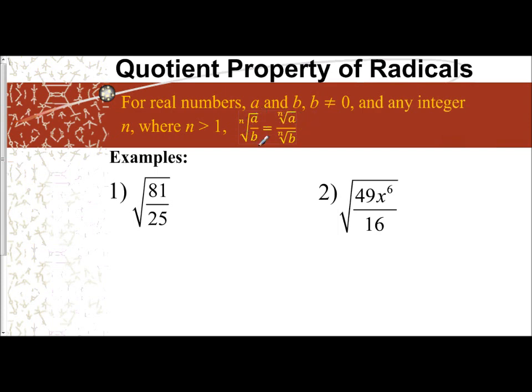So if I have the nth root of a over b, it's equal to the nth root of a over the nth root of b. We've applied this concept when we were simplifying radicals and simplifying nth roots.